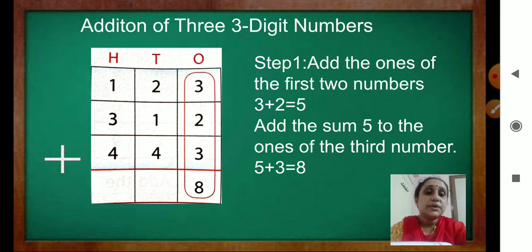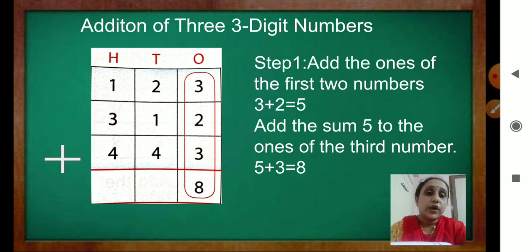See the numbers — 100s, 10s, 1s. The numbers given are 123 plus 312 and 443.